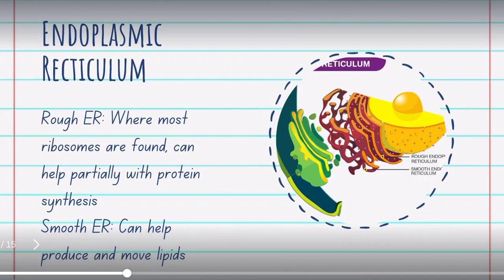The endoplasmic reticulum is made up of two different departments. The rough ER, where most ribosomes are found and can help partially with protein synthesis, and the smooth ER can help produce and move lipids.